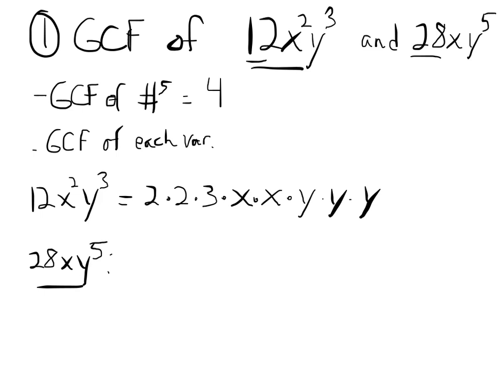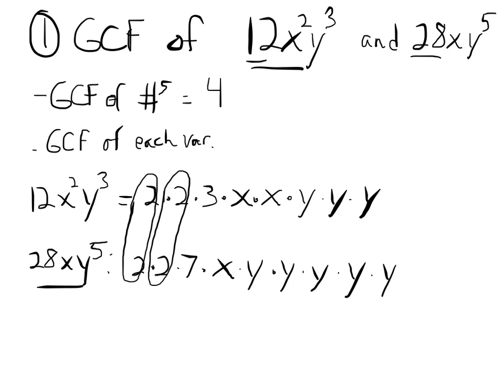You should have had 28xy⁵ expanded as 2 × 2 × 7 × x × y × y × y × y × y. Now go through and circle all the common factors. The common factors for the numbers are 2 and 2. Obviously 3 and 7 are not in common — remember, common means they both have to have it.